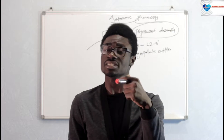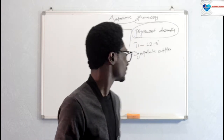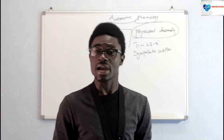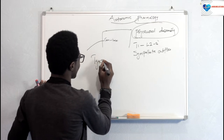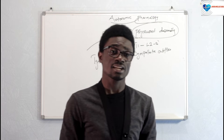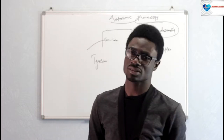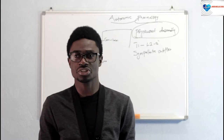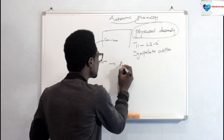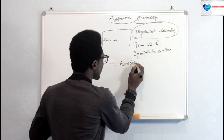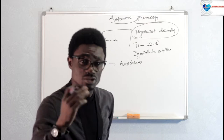Norepinephrine is being synthesized in the nerve terminals. How does norepinephrine get synthesized? We know that norepinephrine is synthesized from an amino acid called tyrosine. In the nerve terminal of these sympathetic fibers, there are specialized tyrosine pumps that take tyrosine from the blood into the axoplasm, into the cytoplasm of the nerve terminals.